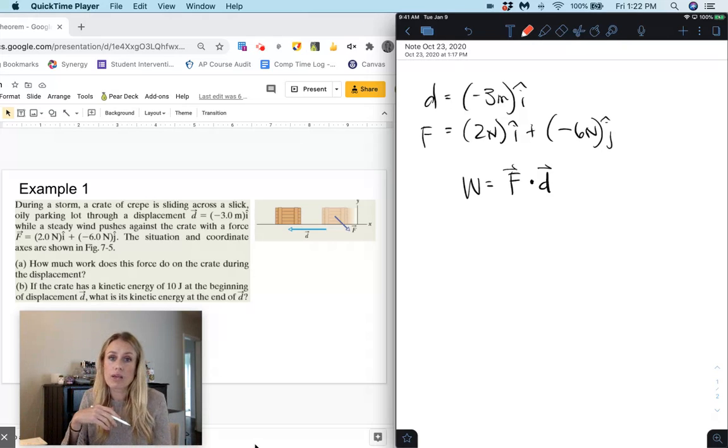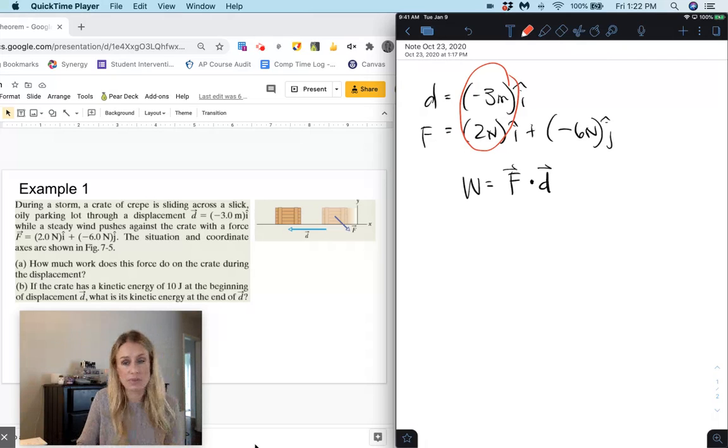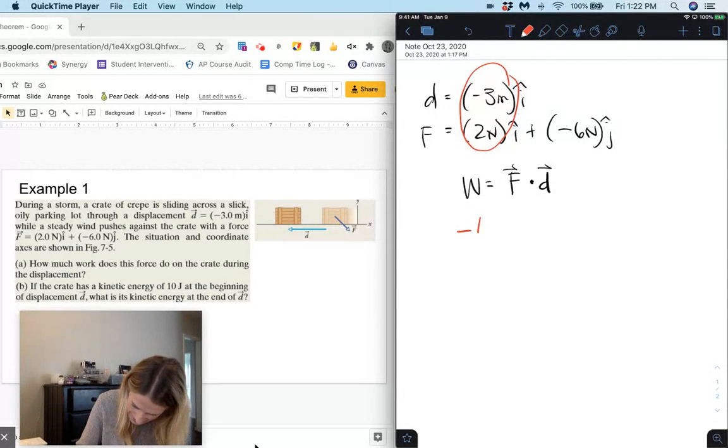Now here we can see that we only have a displacement in the x-direction, so our i-hat direction. So all we do here is multiply these two things together so we get negative 3 multiplied by 2 is negative 6 joules for our i-hat.